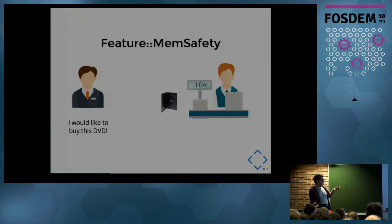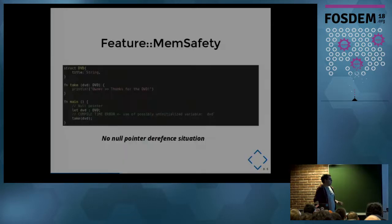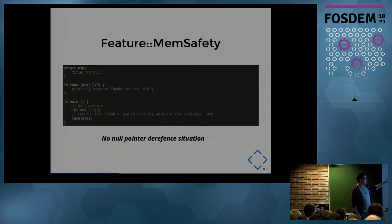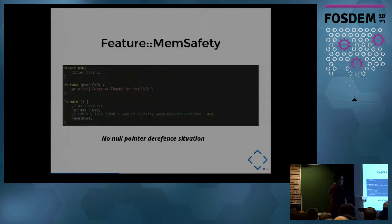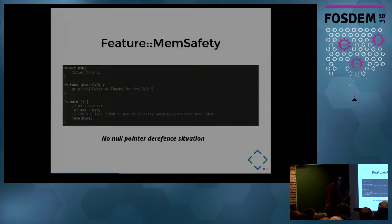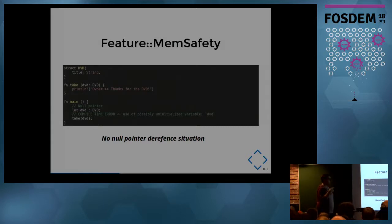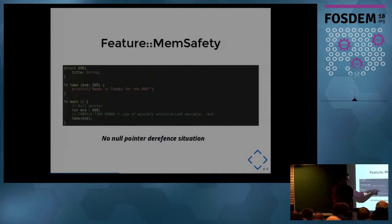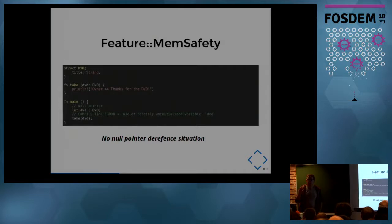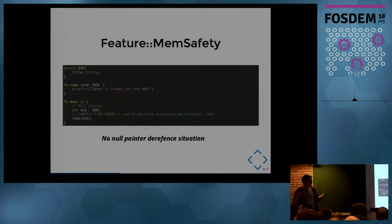Imagine you are a consumer and you want to buy a DVD. But if the box is empty, you cannot buy it — it's not legal. The DVD seller cannot sell you an empty DVD. It's the same case in Rust: there is no null pointer dereference situation. If we have a struct DVD with a title and a function that takes the struct directly, but we haven't initialized the DVD in main, we get a compile-time error — not at runtime. The compiler tells you: use of possibly uninitialized variable DVD. You cannot run this program because there is a null pointer dereference situation.